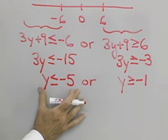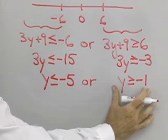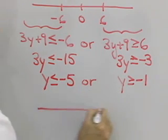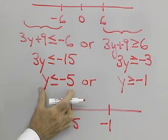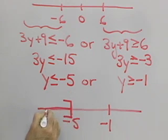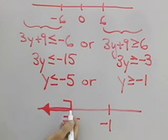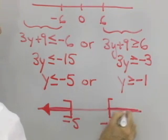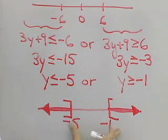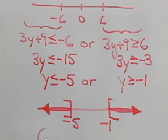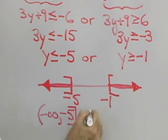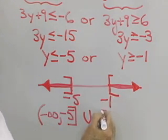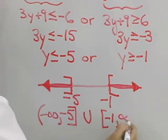The solutions are: any y less than or equal to negative 5, or any y greater than or equal to negative 1. For the graph of the solution set, I'll place negative 5 and negative 1 on the number line, using bracket notation at both endpoints since they are included. In interval notation, the solution is negative infinity to negative 5, closed bracket, union with negative 1, closed bracket, to positive infinity.